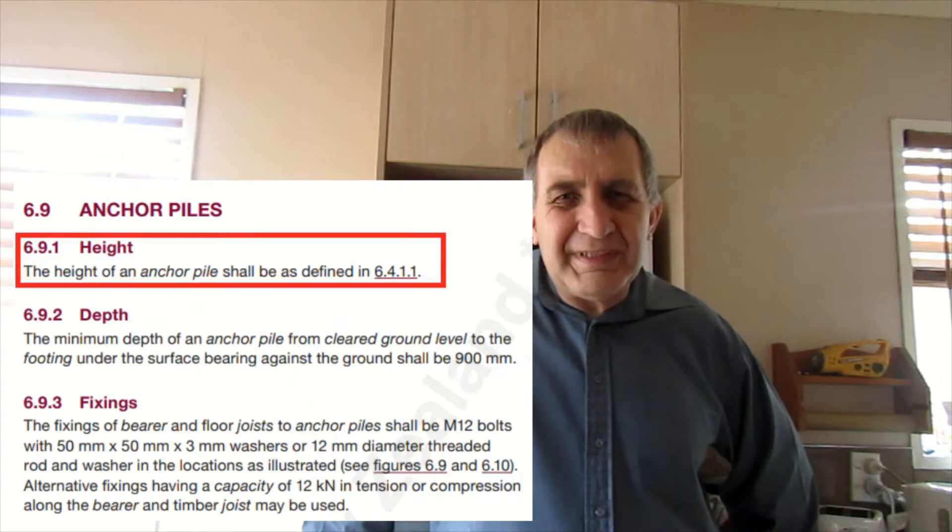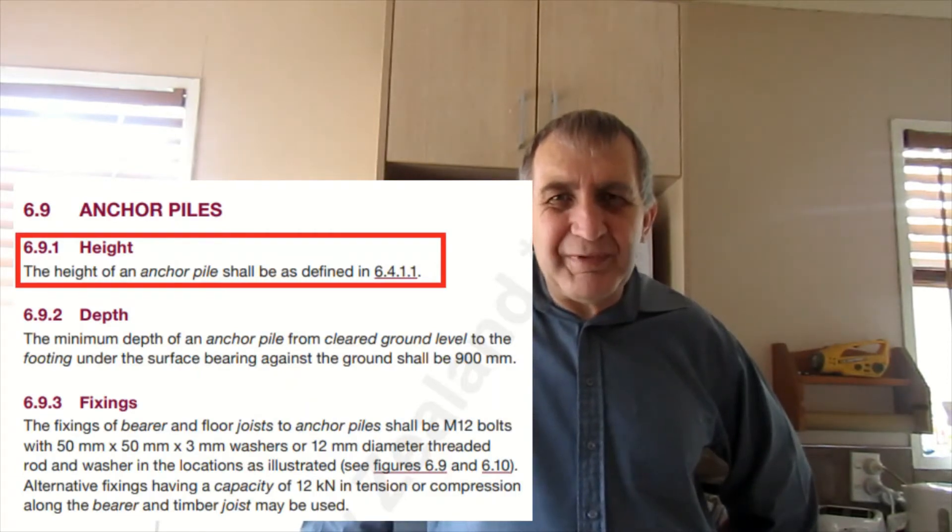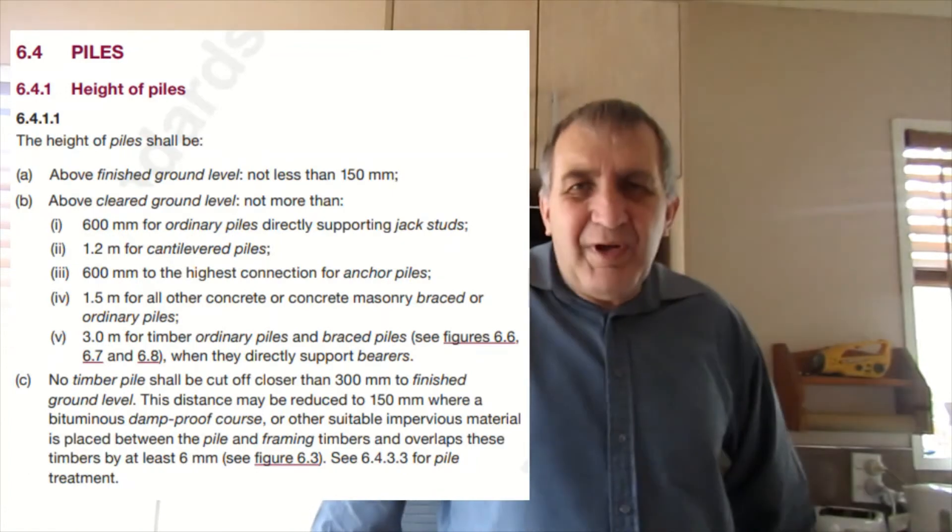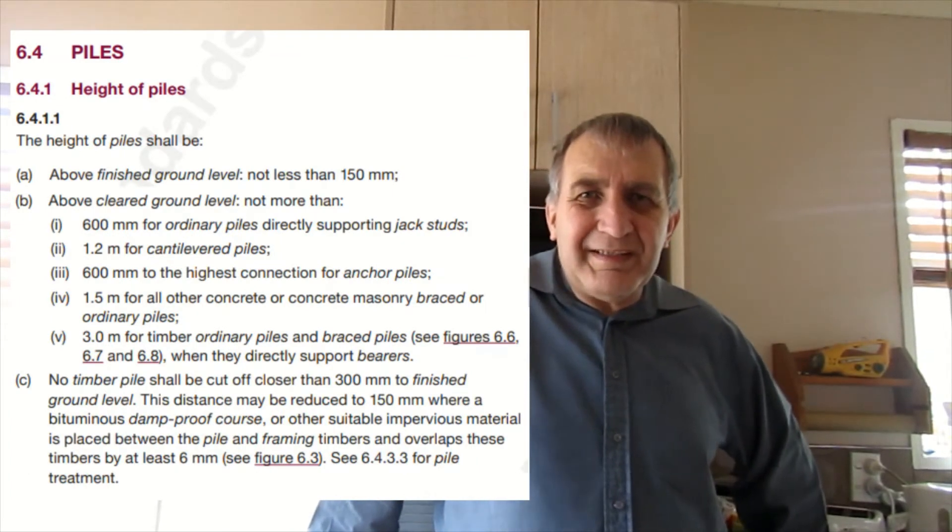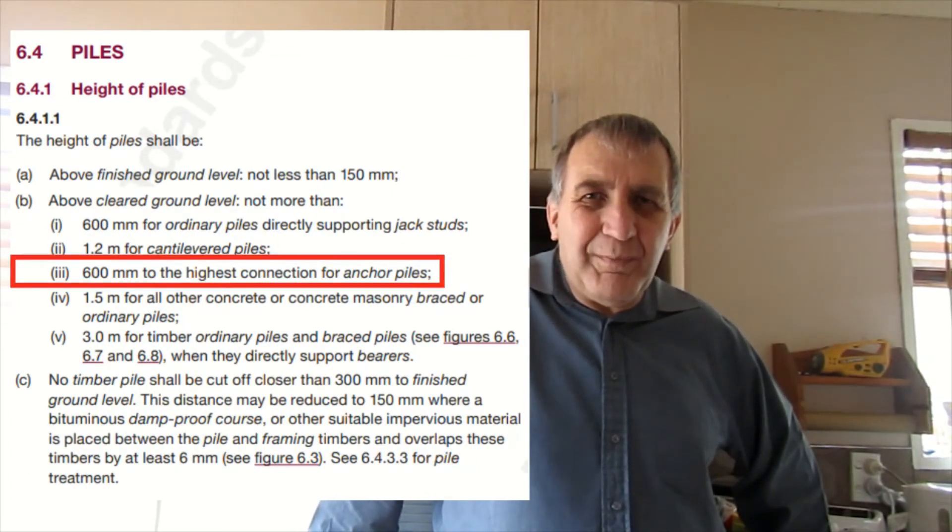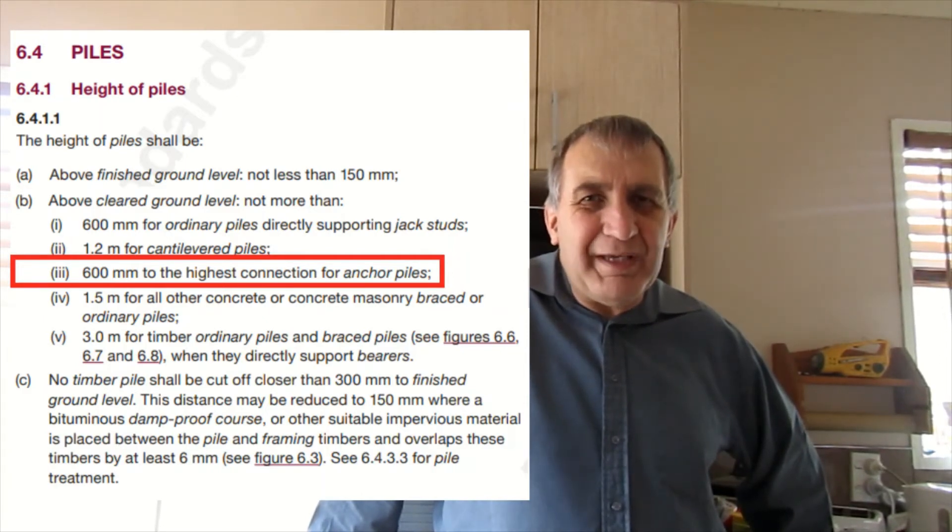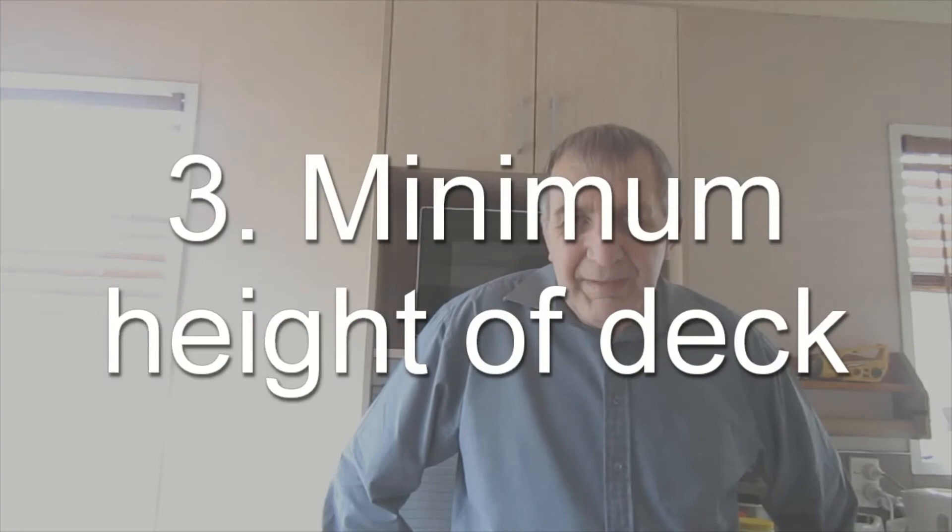That particular clause actually refers to a different clause which refers to the height of an anchor pole. The maximum height of an anchor pole is under clause 6.4.1.1b and then triple i after that.